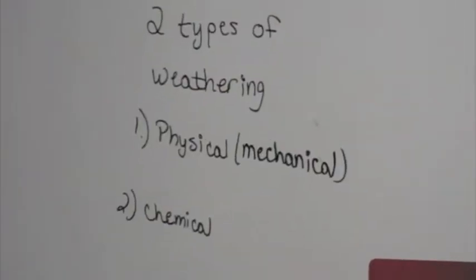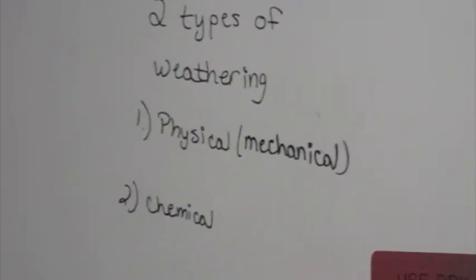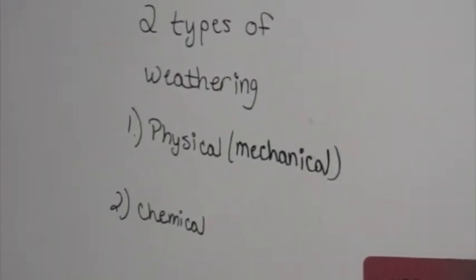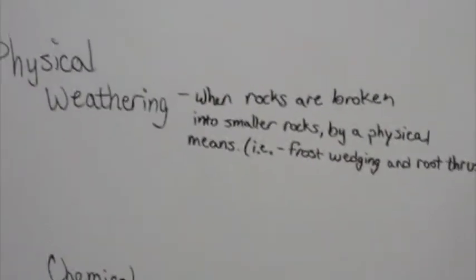Fragmentation of freshly exposed bedrock can occur by two processes: one being physical, also known as mechanical, and two chemical. Physical weathering is when rocks are broken into smaller pieces by physical means, which I'll demonstrate here by pulverizing this small rock. This process can happen due to mass wasting, glaciation, and fractures and folding of the earth.